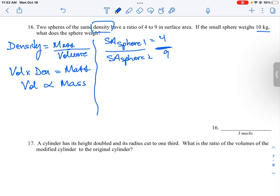We can't go to it directly, but we can go through the radius of the object. The radius of sphere 1 to the radius of sphere 2 is going to be the square root of the area, so that's the square root of 4 over 9, which equals 2 over 3.